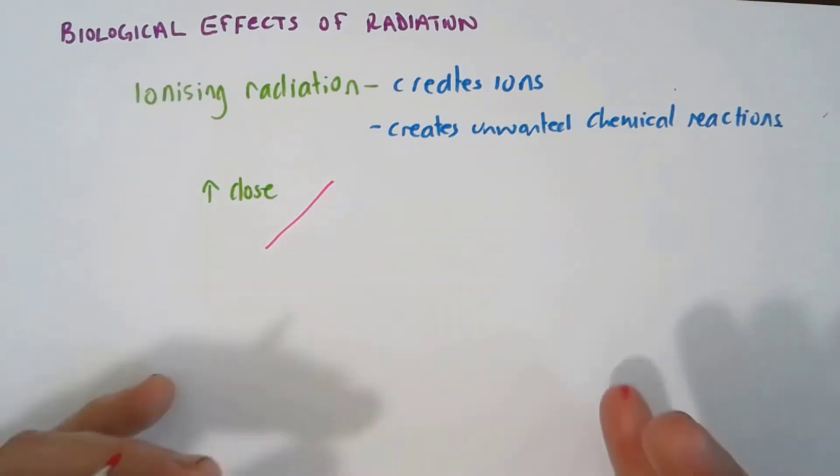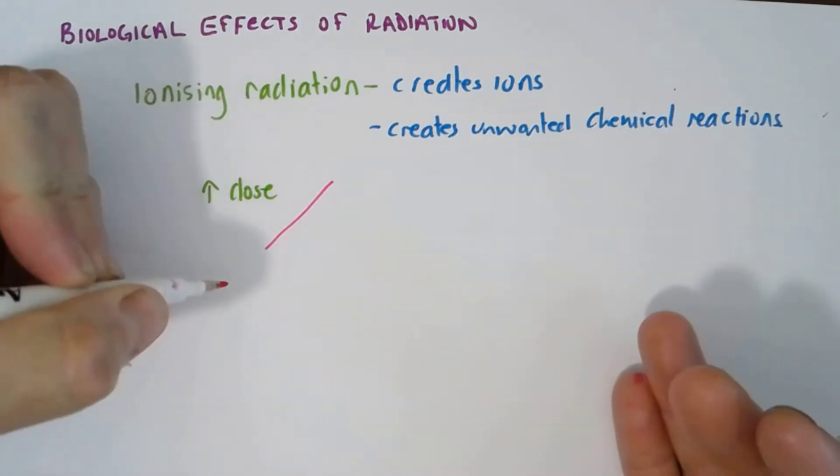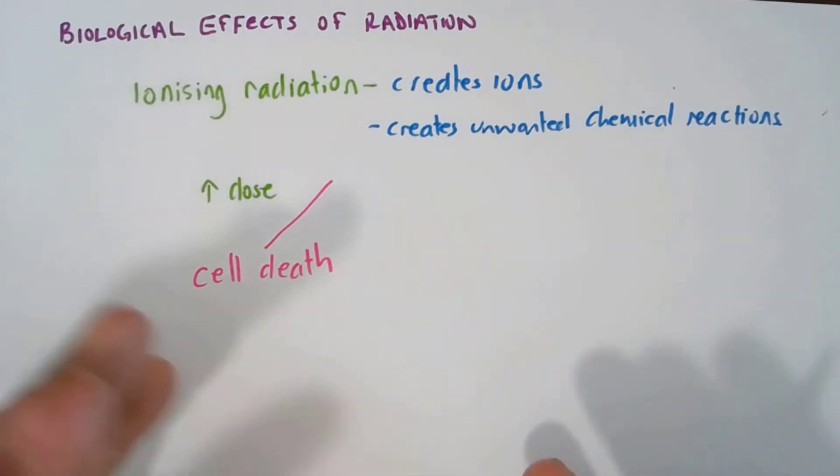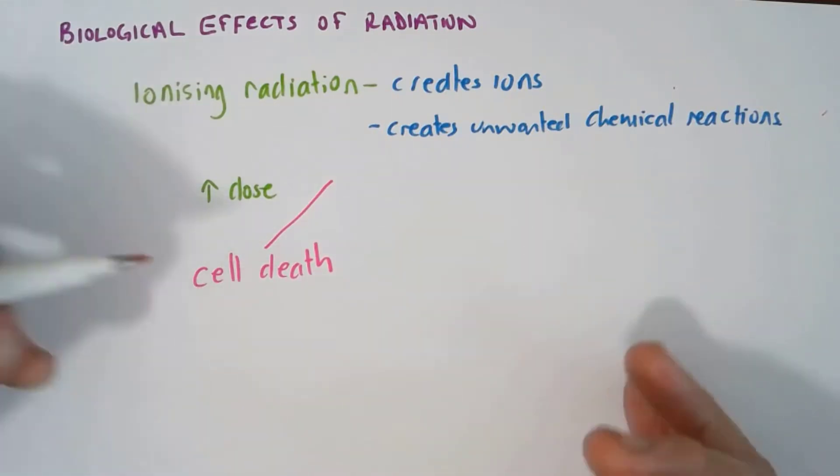It creates ions within the cell causing unwanted chemical reactions that actually cause cells to die. Now in a local area, for example on the skin or in the tissue, if a local part has been exposed it actually causes radiation burns.